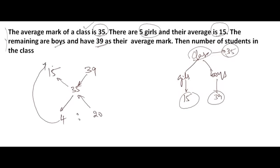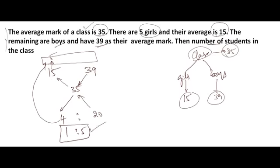The differences give the ratio of the quantities — here, the number of students. The ratio is 4 to 20, which simplifies to 1 to 5. This 1 part corresponds to the girls' average of 15, and there are 5 girls. So if 1 part equals 5, then the total 6 parts equals 30. The total number of students in the class is 30.